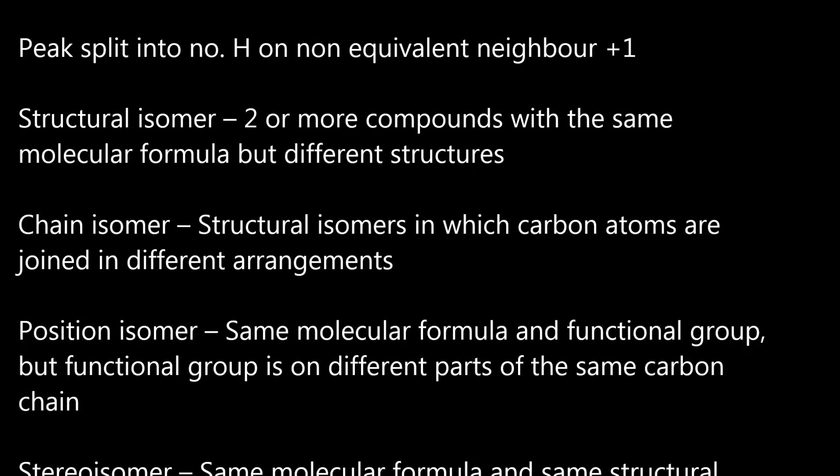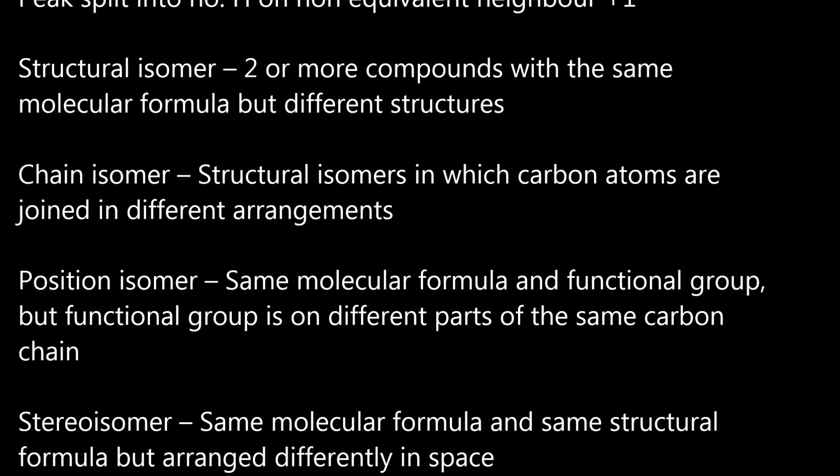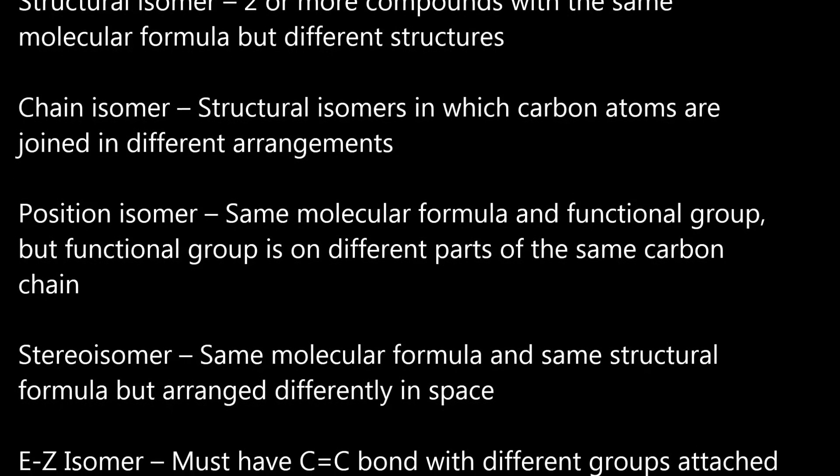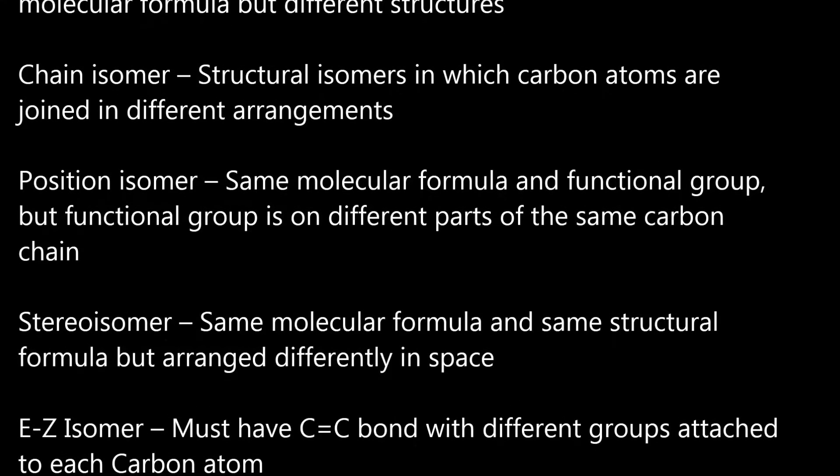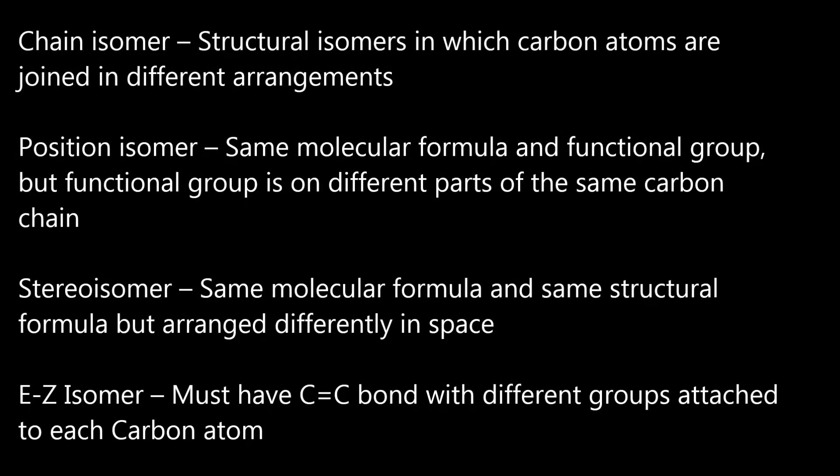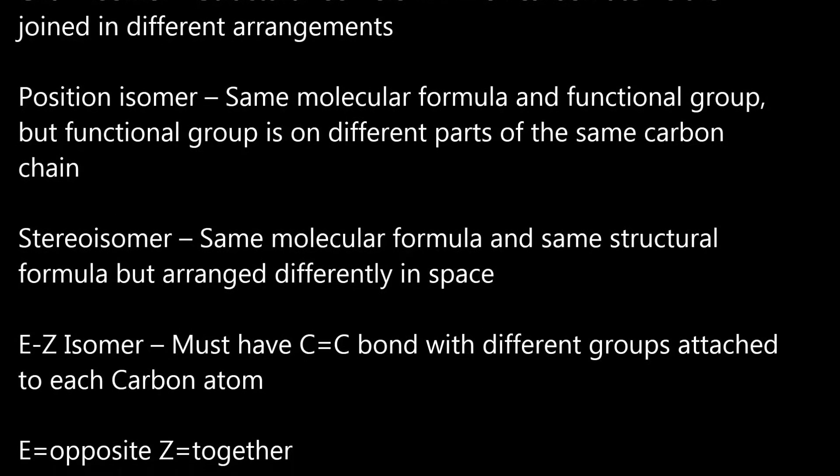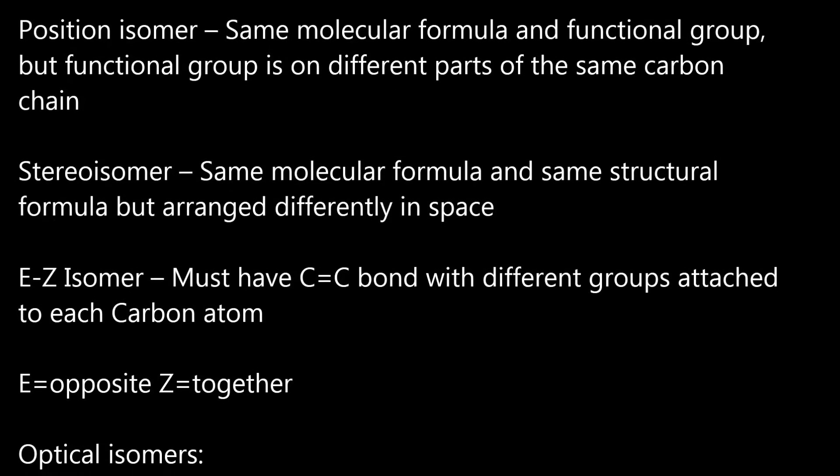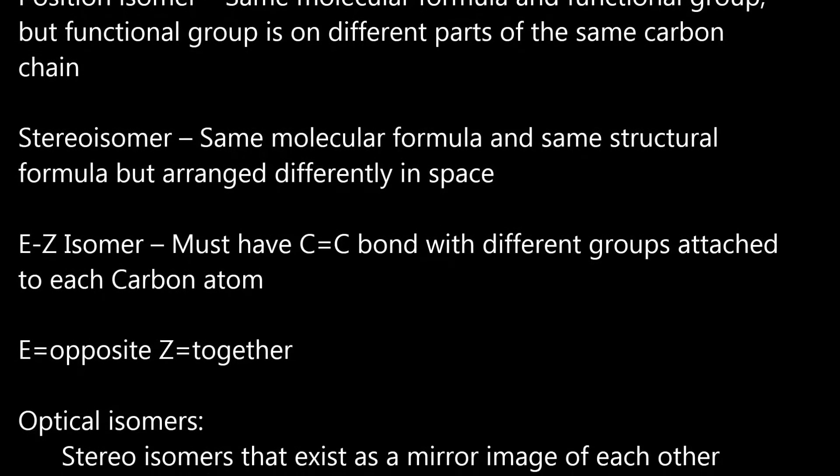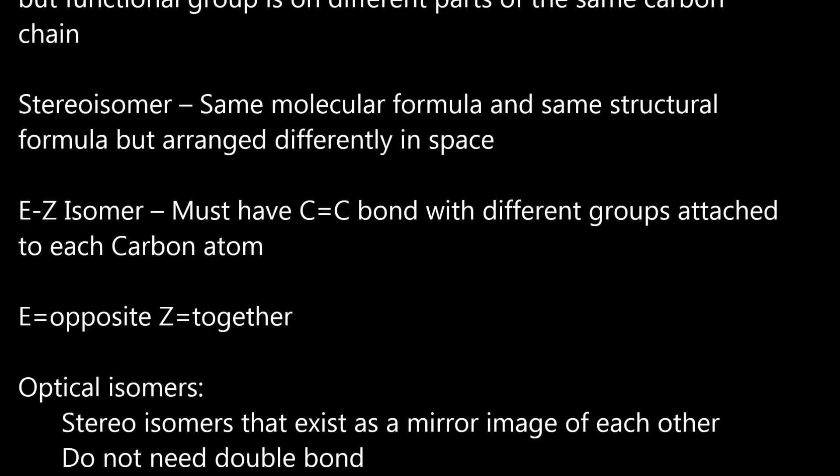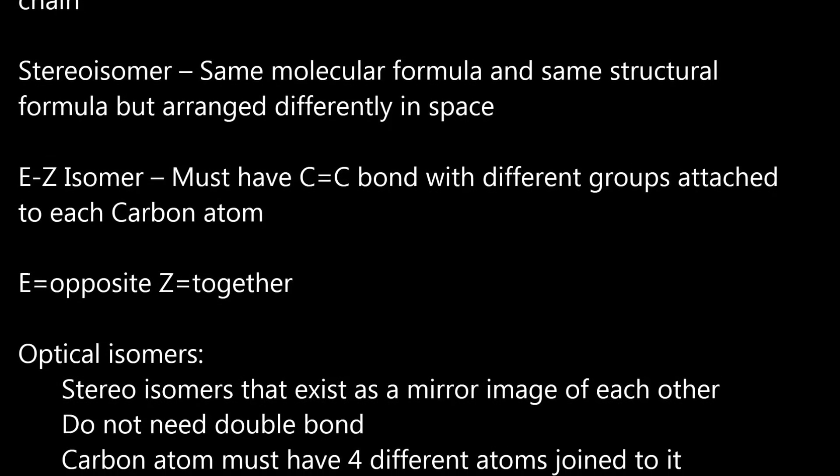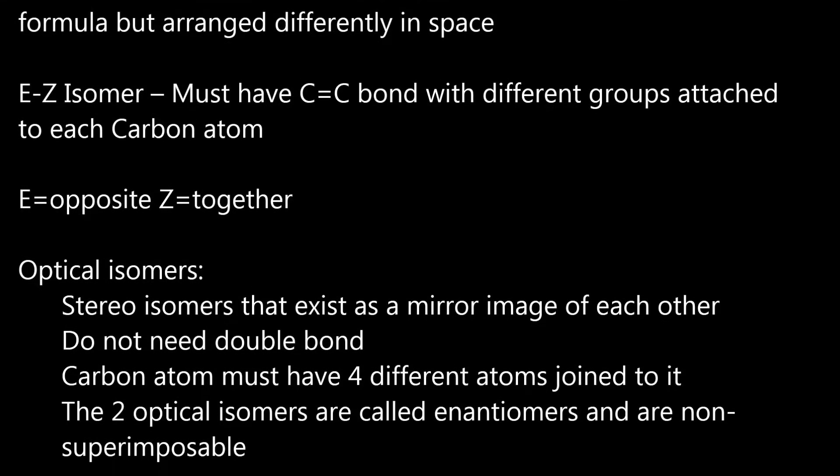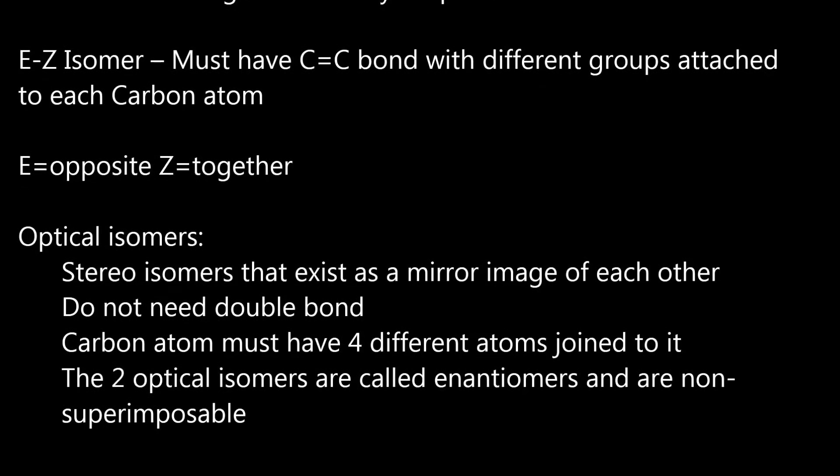Structural isomer equals two or more compounds with the same molecular formula but different structures. Chain isomer equals structural isomers in which carbon atoms are joined in different arrangements. Position isomer equals same molecular formula and functional group, but functional group is on different parts of the same carbon chain. Stereoisomer equals same molecular formula and same structural formula but arranged differently in space.